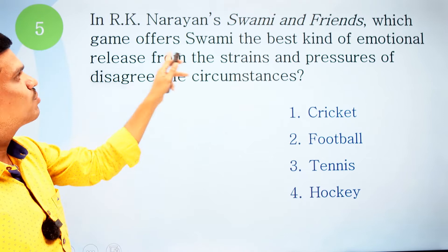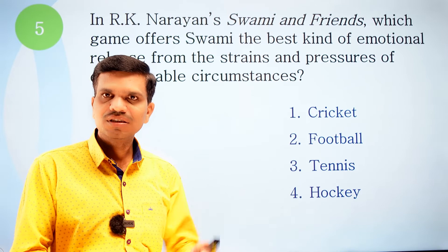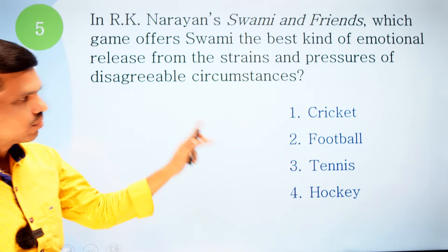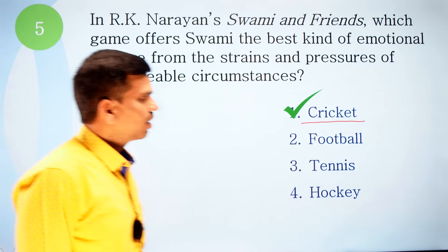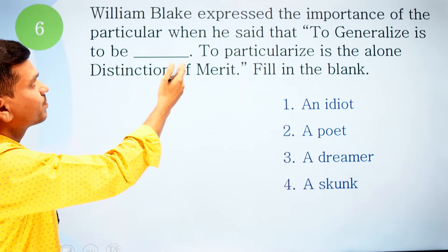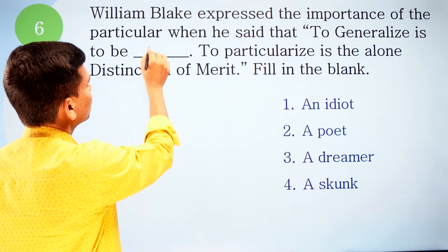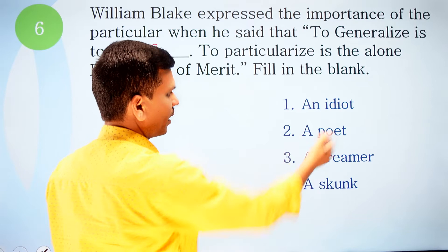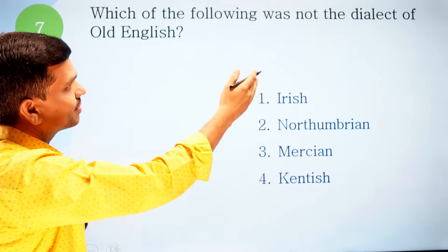Question five: In RK Narayan's 'Swami and Friends,' which game offers Swami the best kind of emotional release from disagreeable circumstances? Options are: one, cricket; two, football; three, tennis; four, hockey. The correct option is cricket. Question six: William Blake expressed the importance of the particular when he said 'to generalize is to be [blank]; to particularize is the alone distinction of merit.' Options: one, an idiot; two, a poet; three, a dreamer; four, a skunk. The correct option is 'an idiot.'